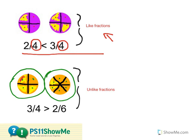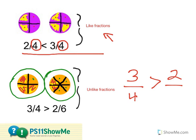For three-fourths, I'm going to fill in three of the four pieces. And for two-sixths, I'm going to represent two of the six pieces. By doing this, I can very clearly see that three-fourths is a much bigger fraction than two-sixths, and my greater than, less than symbol is going to open up towards the three-fourths.